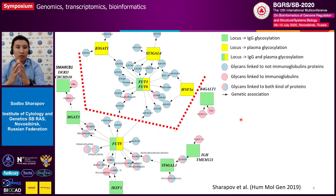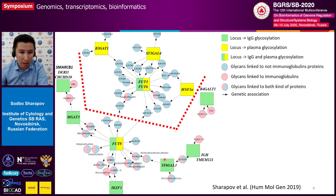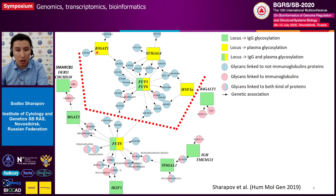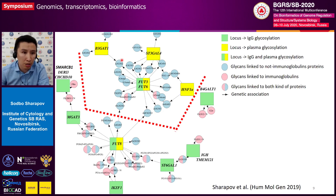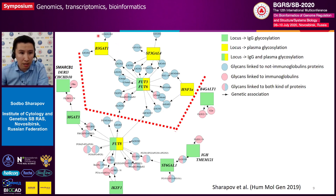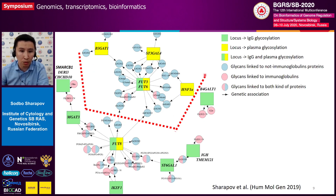Therefore, we constructed a gene-phenotype network presented on this slide. We have squares and circles. Squares represent loci that we found and replicated to be associated with certain plasma N-glycome traits. In circles, we have glycan traits. Each arrow means that this locus is genome-wide significantly associated with this particular glycan trait. As you can see, this network of genes and glycan traits can be manually divided into two sub-networks — the upper one and the lower one.